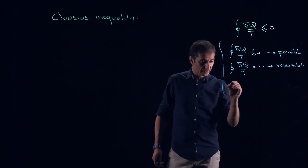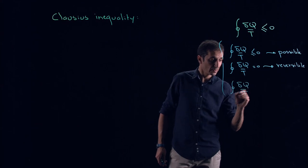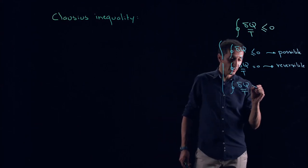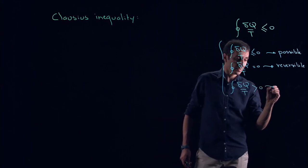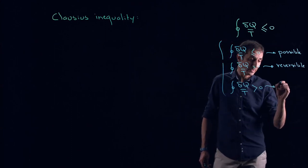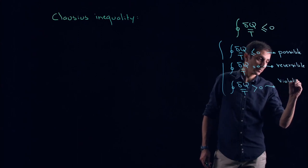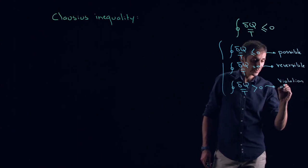And if you calculated delta Q over T everywhere and you found it positive, this means that you are violating the second law of thermodynamics. This is a violation of the second law.